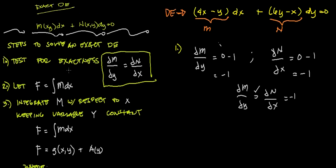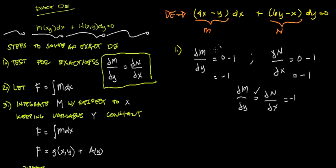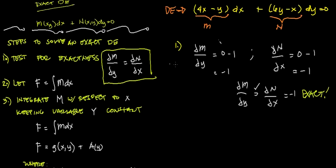So by doing the test for exactness, we have already evaluated this given DE, and we can say that this given DE is exact. Since it is exact, we can now proceed to Step 2.